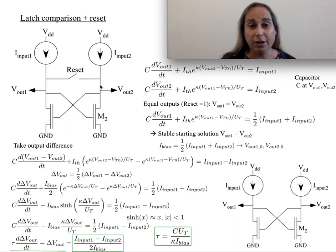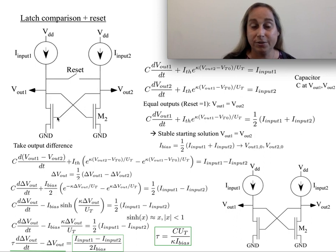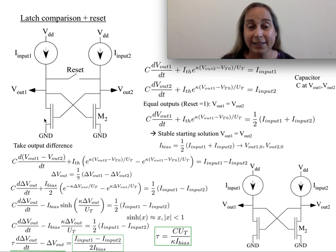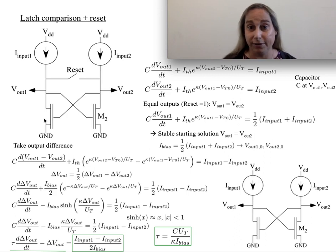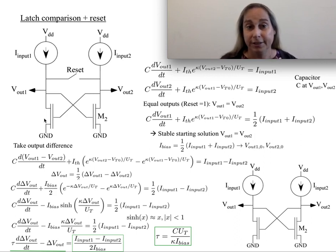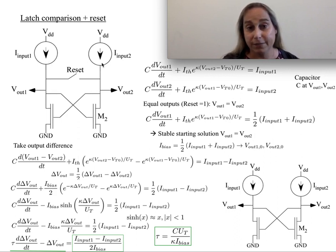If the switch is open, this connects to the other gate, which is also a common source structure with an inverting gain much greater than one. You quickly realize this structure is not stable — it will very much want to push you to either one side or the other. This is exactly what you want for a comparison: you want to know if there's any difference in the two voltages, implied by the difference of the currents.